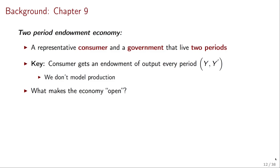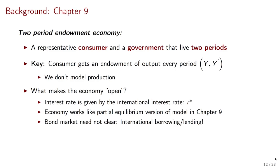Now, what makes this economy open? What makes it different from the economy in chapter nine? Well, it's a simple thing. Interest rate is given by the international interest rate R star. That's going to imply that this economy actually works exactly like the partial equilibrium version of the model in chapter nine. The bond market need not clear precisely because of international borrowing and lending. If there is the need for additional saving in the economy, they can save by lending to other countries. If there is a need for additional borrowing, they can borrow from other countries. So the bond market need not clear.